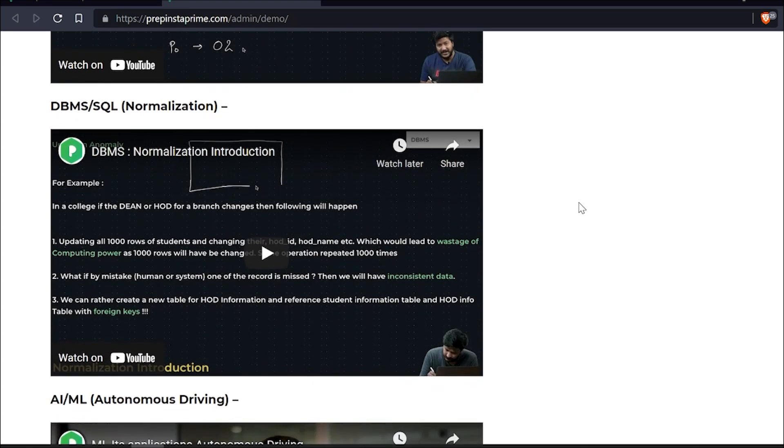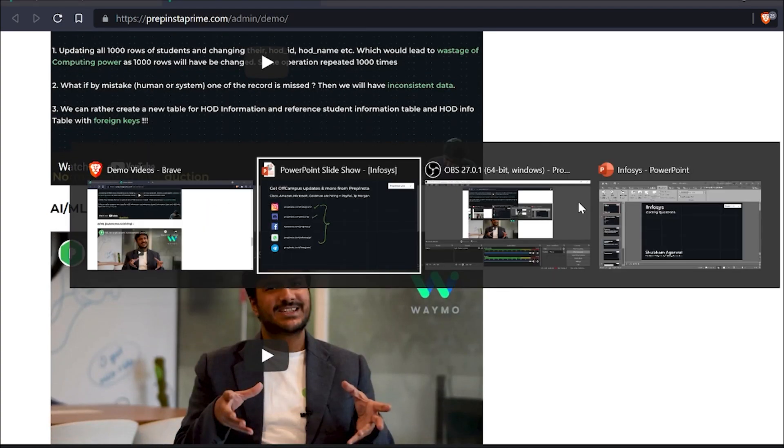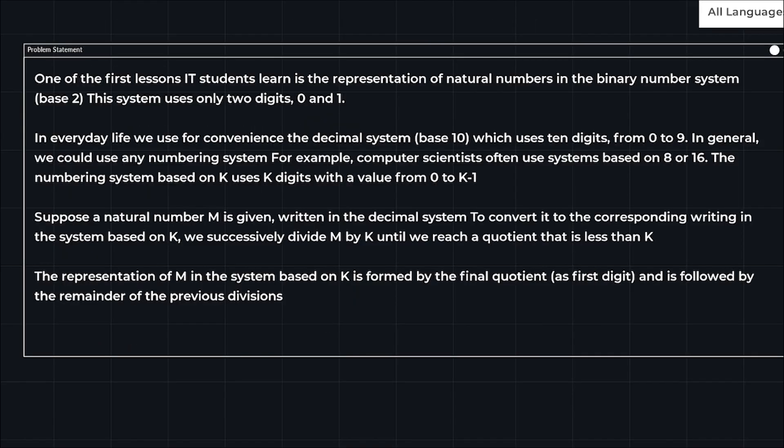Let's get back to the coding question. The question says one of the first lessons IT students learn is the representation of natural numbers in the binary number system base 2. This system uses only two digits, 0 and 1. If you are coming from BCA or BTech, in your computer fundamentals in your first semester you will definitely learn the conversion of natural numbers in a binary number system.